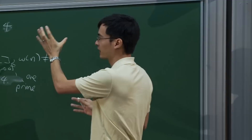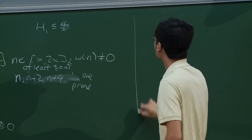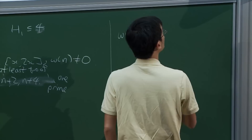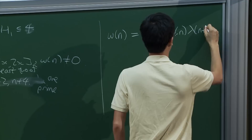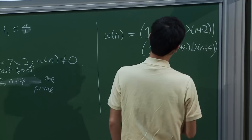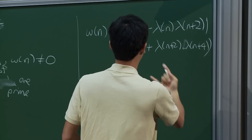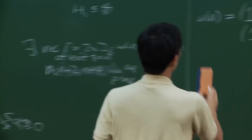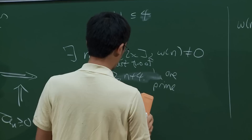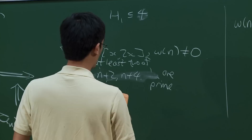If you could prove H_1 less than 4 by sieve theory, then you could also prove a weighted version, but the weighted version is false—at least we believe it's false—because we can take a particular counterexample weight. This is a sort of indirect proof by contradiction: if you could prove this sort of estimate by sieve theory, then you could also prove the weighted version, but the weighted version is false. I need to think about this weight function carefully—let me set this up.